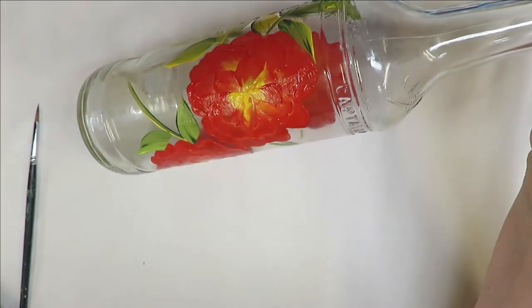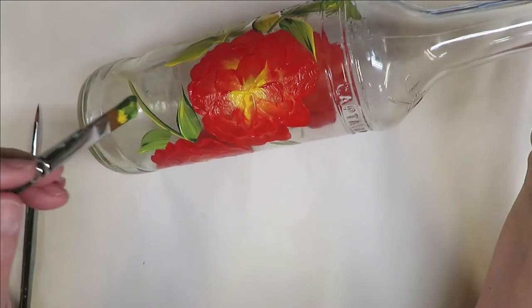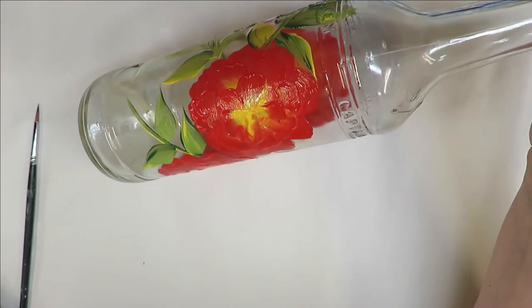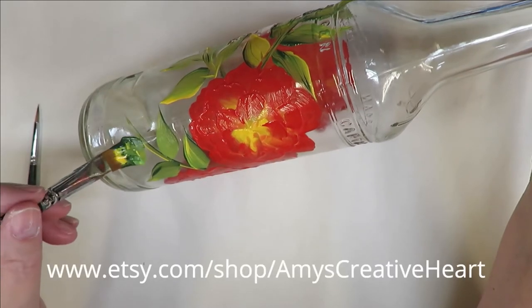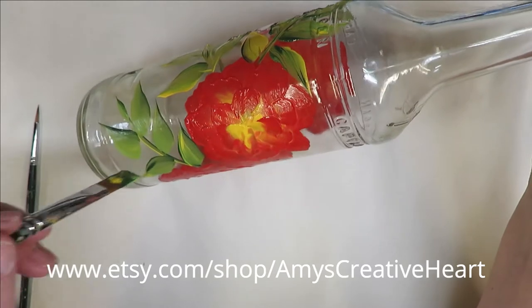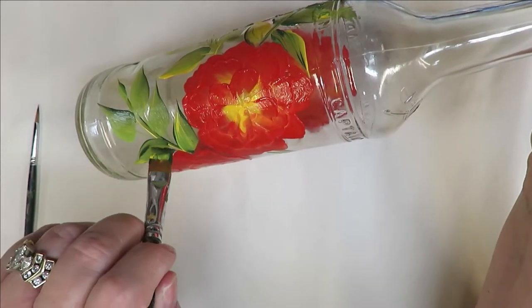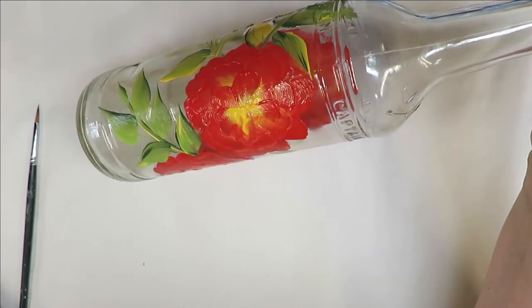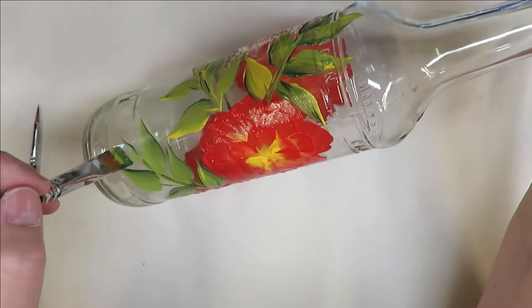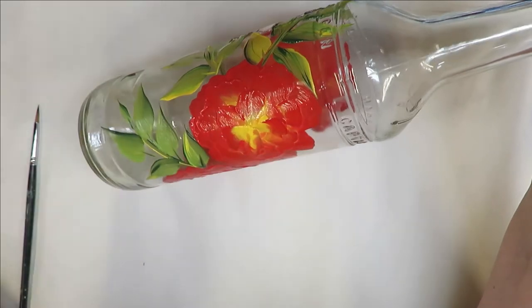Because we're doing wet on wet, if you paint into the red, you're going to be pulling some red into your brush, into your leaves, and that can be very pretty. Just be aware. You can turn it this direction, have the darker ones or the lighter ones, just up to you.